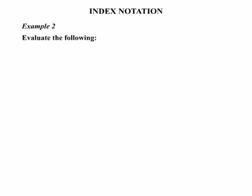Let's look at another question. In number 2 we're asked to evaluate the following — 'evaluate' just means work out the answer. For part A we've got 2 to the power of 3. Our base number is 2, and we're going to multiply it by itself 3 times: 2 times 2 times 2. 2 times 2 equals 4, and if we multiply by 2 again we get 8. So our final answer is 8.